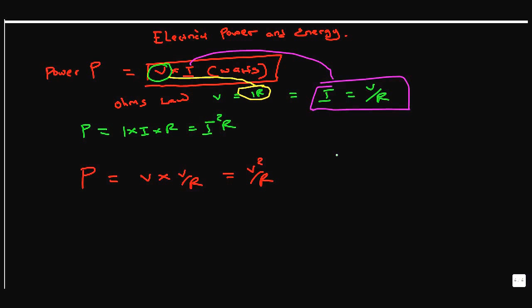Let's do an interesting problem on power. We have an electrical kettle in your kitchen that has a resistance of 30 ohms.